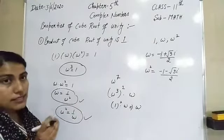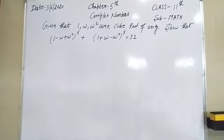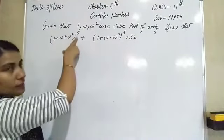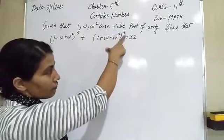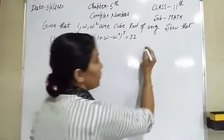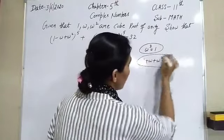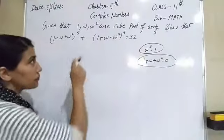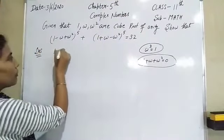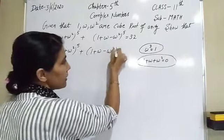Now let's start a few examples. Given that 1, ω, ω² are the cube roots of unity, show that (1 − ω + ω²)⁵ + (1 + ω − ω²)⁵ = 32. We will use the results ω³ = 1 and 1 + ω + ω² = 0. Start from the left-hand side: (1 − ω + ω²)⁵ + (1 + ω − ω²)⁵.